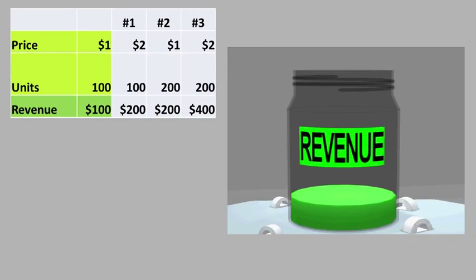Revenue is simply the number of units sold multiplied by the price per unit. Think of this jar as being filled with revenue. In this example, each sphere represents five units of product, and the size of each sphere represents the price. With this in mind, watch how revenue increases in the following three scenarios.